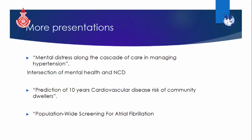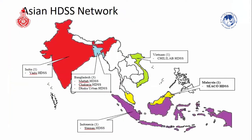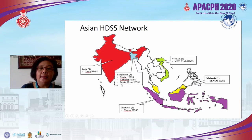Additional presentations will cover prediction of 10-year cardiovascular risk among community dwellers, and population-wide screening for atrial fibrillation to address heart and brain health in elderly people. As for the way forward, we recently established the Asian HDSS Network, with partners including India's Vardu HDSS, three HDSSs from Bangladesh — MetLab, Chakaria, and Dhaka Aben HDSS — SICO HDSS in Malaysia, the Vietnam Chililab under Hanoi University of Public Health, and Salaman HDSS under the University of Gadjah Mada in Indonesia.